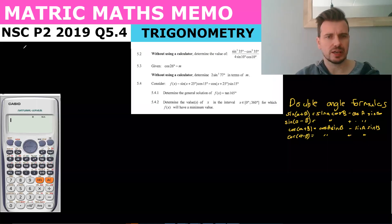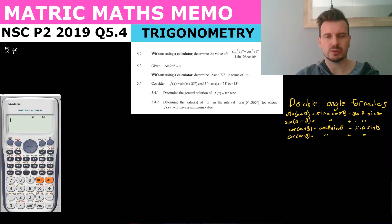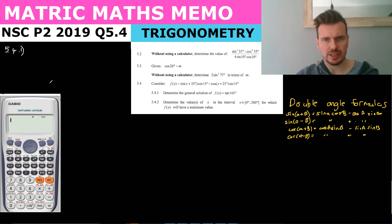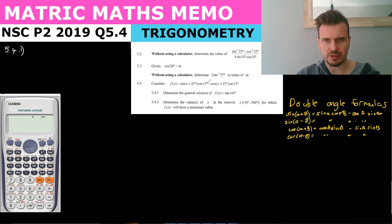Let's look at question 5.4 of the 2019 paper. They say consider f(x) = sin(x + 25)cos(15) minus cos(x + 25)sin(15).